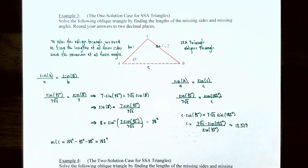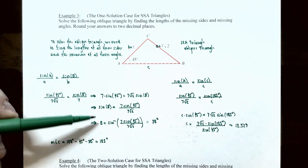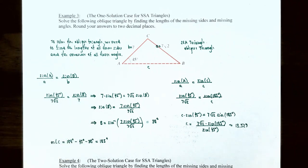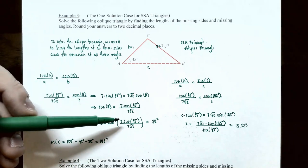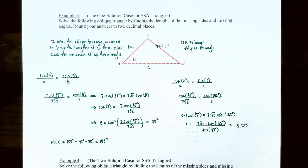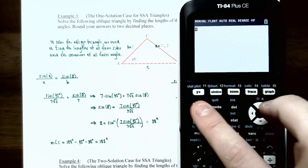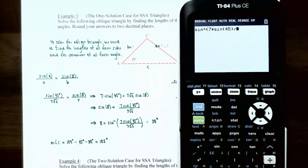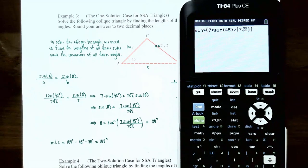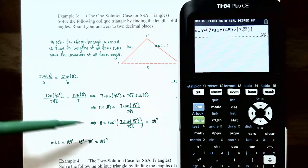To find angle B, take the inverse sine of both sides. The inverse sine and sine functions cancel each other, giving B = sin⁻¹(7·sin(45°) / (7√2)). On the calculator, use second-sine of 7·sin(45°) divided by 7√2, making sure the denominator is in parentheses and the calculator is in degree mode. The answer is 30 degrees, so angle B = 30°.